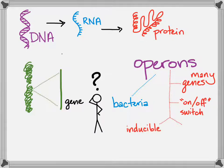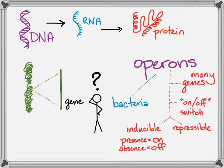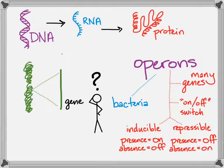Operons can be inducible, which means that the presence of something turns them on, and the absence of it means that the operon is off and the genes are off. Or they can be repressible, which means that when something is present it's turned off, it's repressed, and when that thing is absent it's turned on.